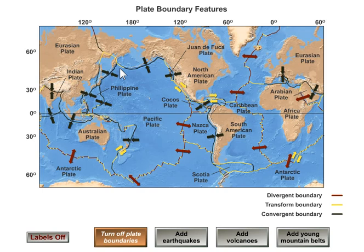Convergent boundaries happen especially around the Pacific Ocean, and also where oceans close and continents collide — like where India is colliding with Asia to make the Himalayas, and where Africa and Saudi Arabia are colliding with southern Europe to make the Alpine belt through southern Europe.